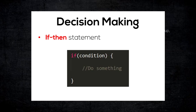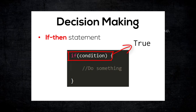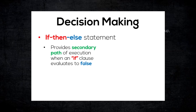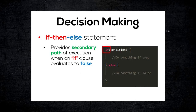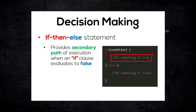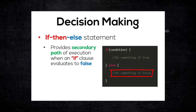Now that we have seen how we can use the if-then statement, where the statements within the then clause will be executed if the condition is true — what if we need to execute certain statements if the condition is false? This is where the if-then-else statement comes in handy, because it provides a secondary path of execution when an if clause evaluates to false. The structure of an if-then-else statement looks something like this, where we have the if keyword, the condition to be tested, the statements to be executed if the condition is true, and followed by the else keyword as well as the statement to be executed if the condition is false.